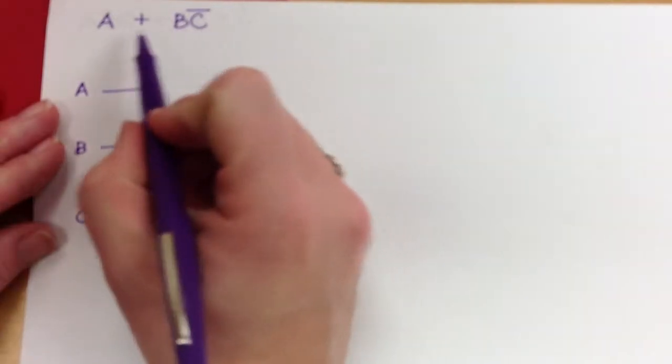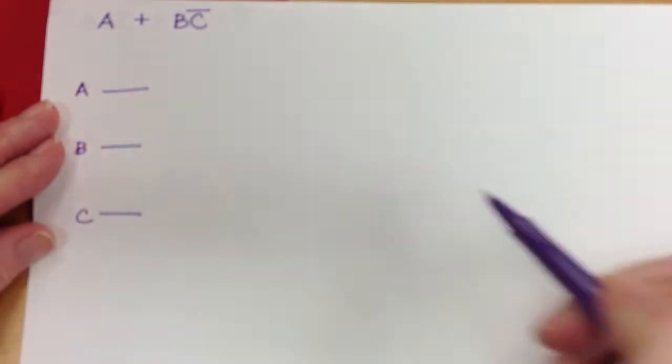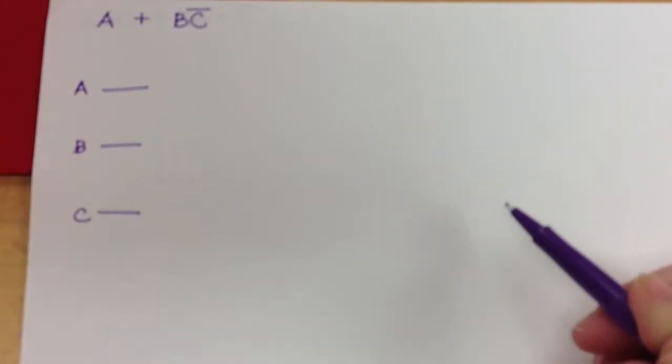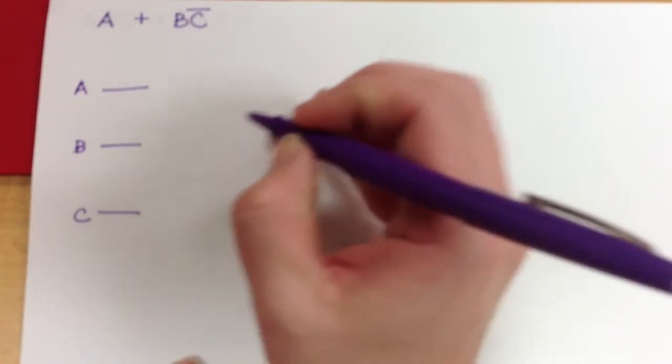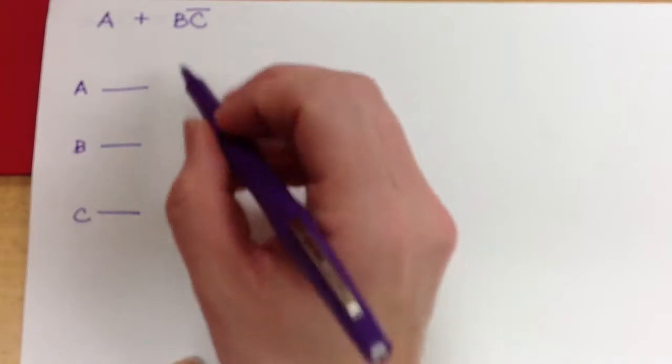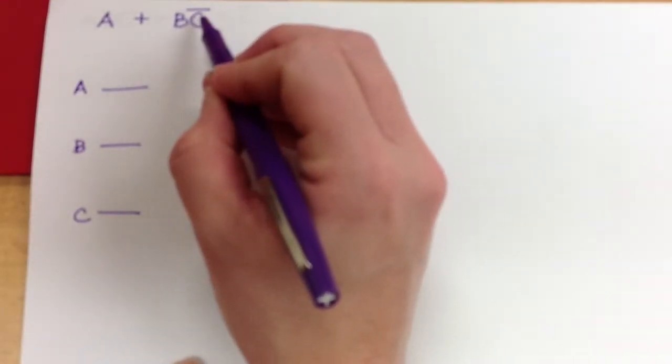So A is not anded with anything else. So let's just instead do B or not C. So B and not C.